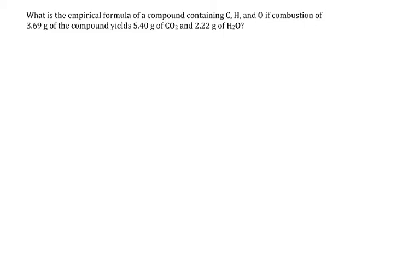This is the clicker question we did on Wednesday that we ran a little short on time with. It's a combustion analysis problem. You're asked to find the empirical formula of a compound that has carbon, hydrogen, and oxygen. You have the initial mass of the compound, then the mass of carbon dioxide and the mass of water.